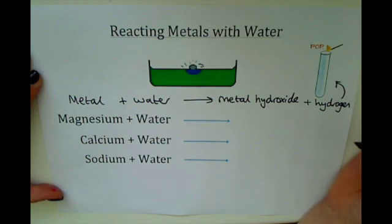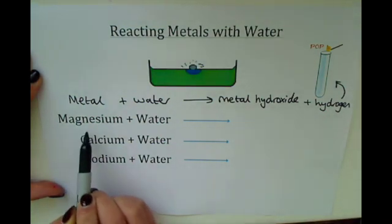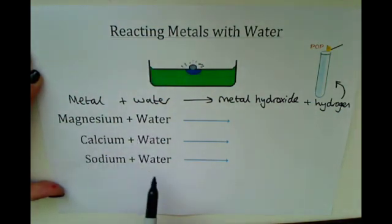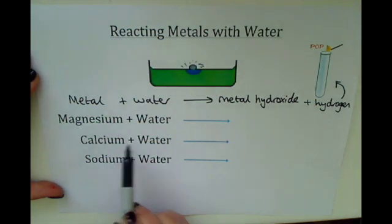So we can react, for example, magnesium and water, calcium and water, and sodium and water to make a metal hydroxide and hydrogen gas.